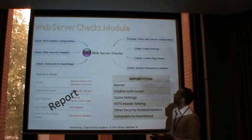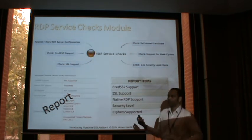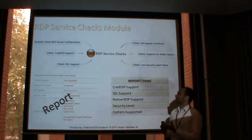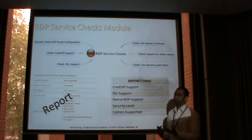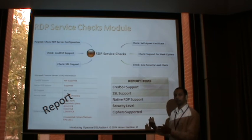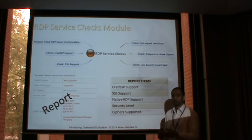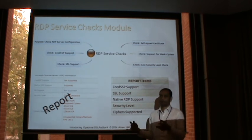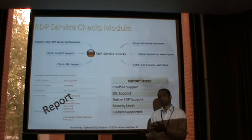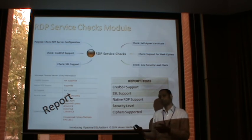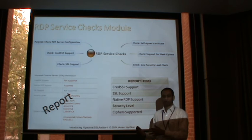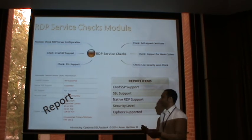The RDP service module checks for the three protocols supported by RDP: CredSSP, SSL, and native RDP. If SSL is enabled it will check for self-signed certificates and weak ciphers. If native RDP is enabled it will check for the security level as well as the ciphers supported by the service.